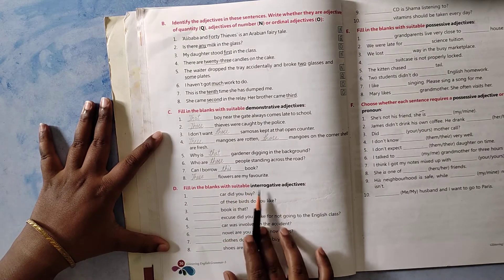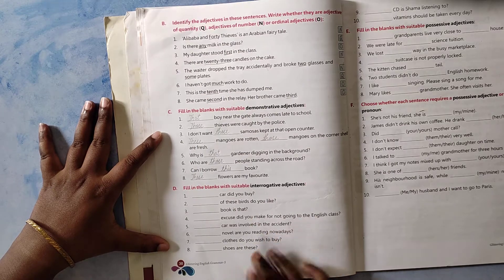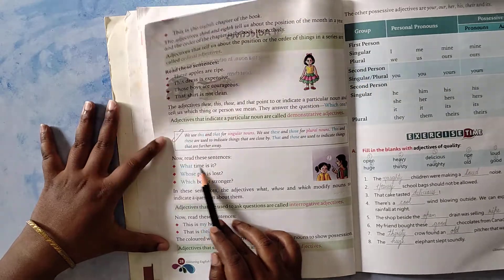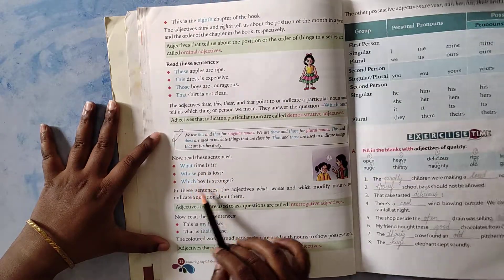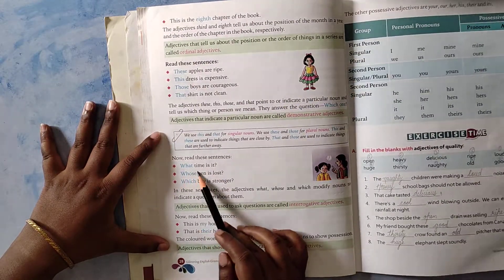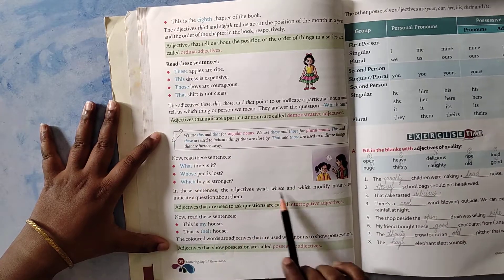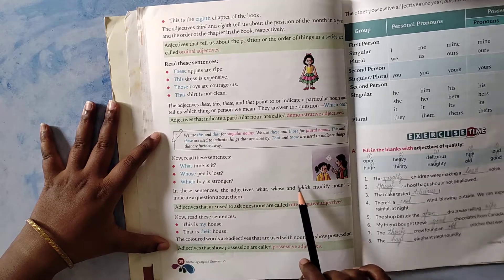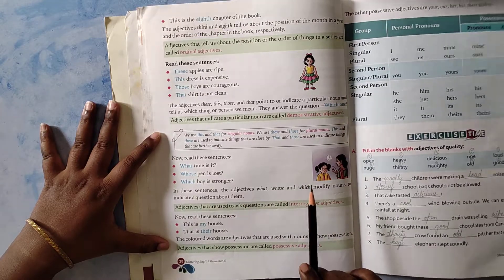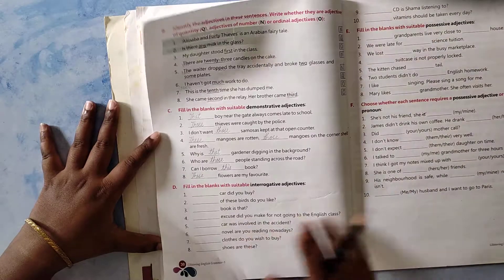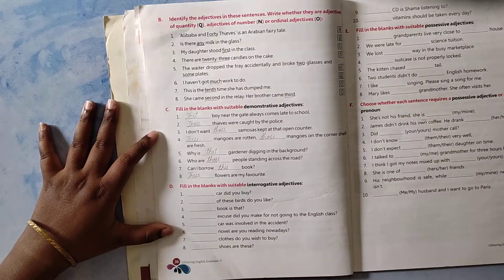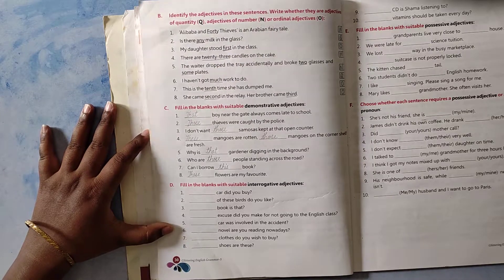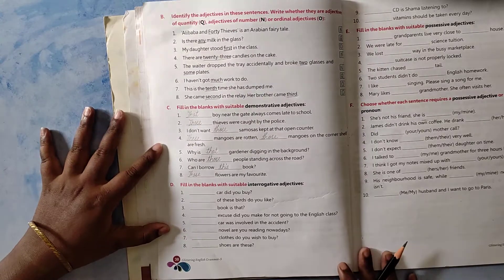Fill in the blanks with suitable interrogative adjectives. Interrogative adjectives are the question words - what time is it, whose pen is lost, which word is stronger. What, whose, and which are used. So questions are what, whose, and which. They modify nouns to indicate questions about them.